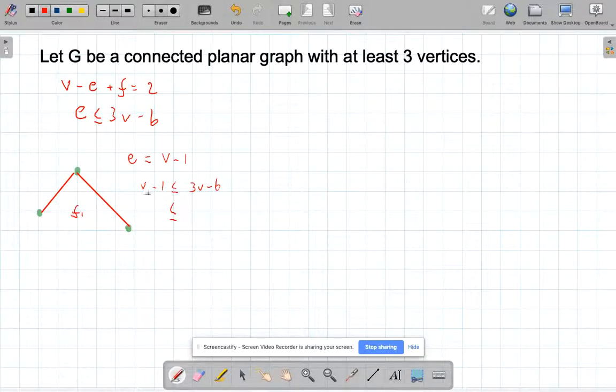So if we then rearrange this, take away one V from both sides to get 2V, add 6 to both sides, we can see here that V is always bigger than or equal to 5 over 2. And one of the conditions is that I have at least three vertices. So it clearly holds true for any tree.